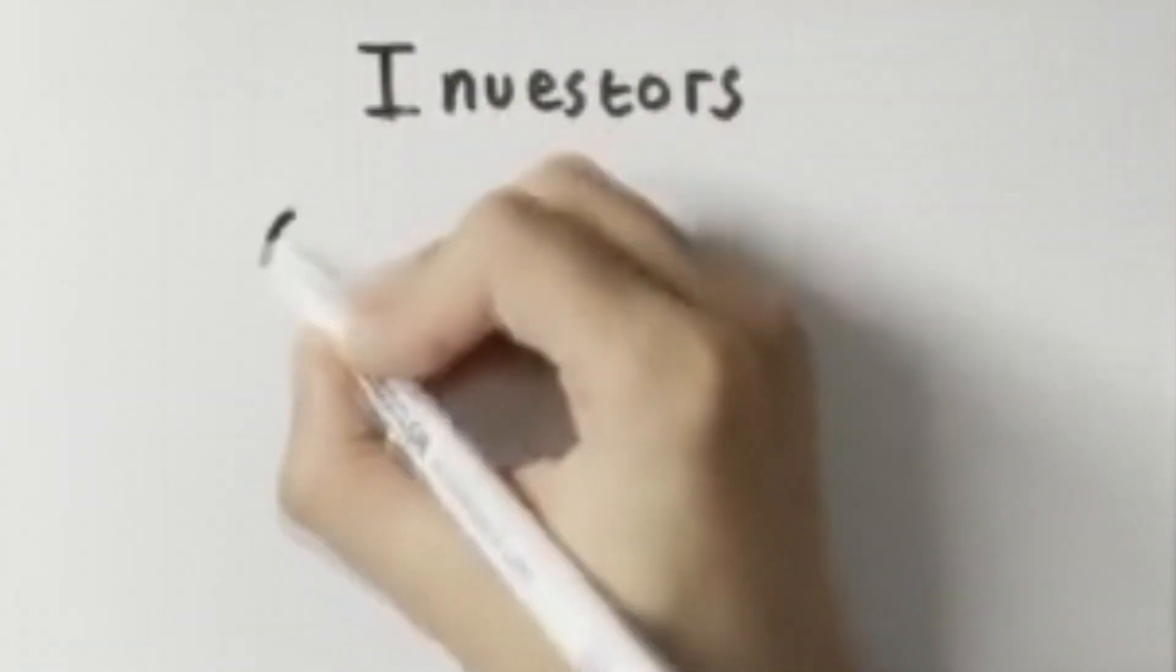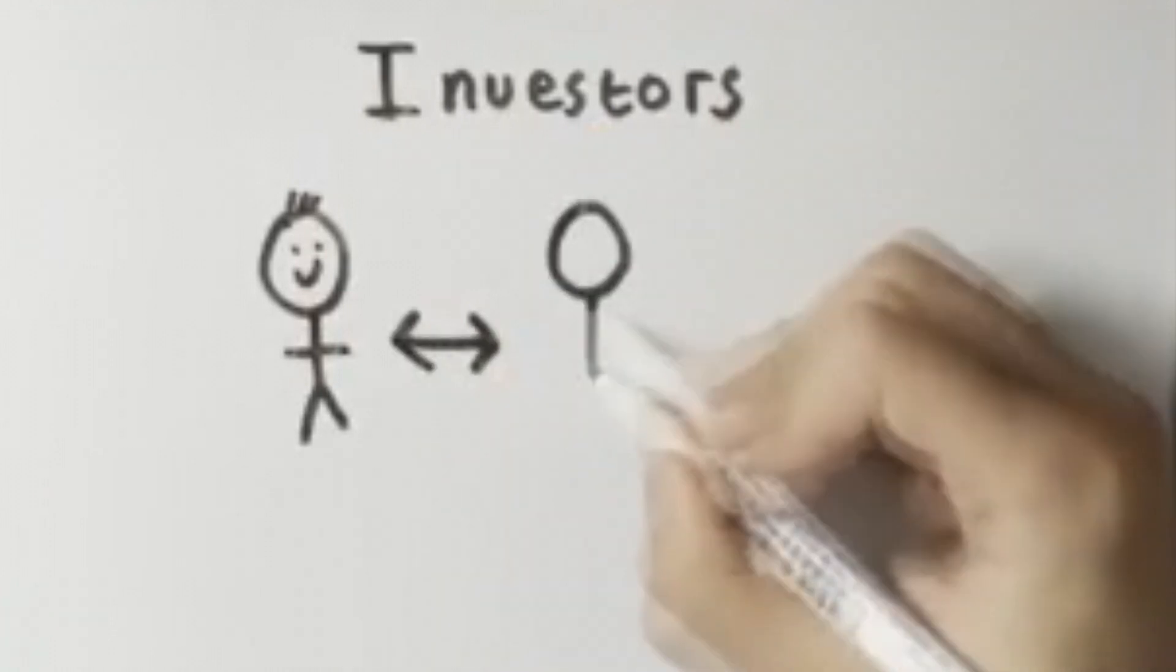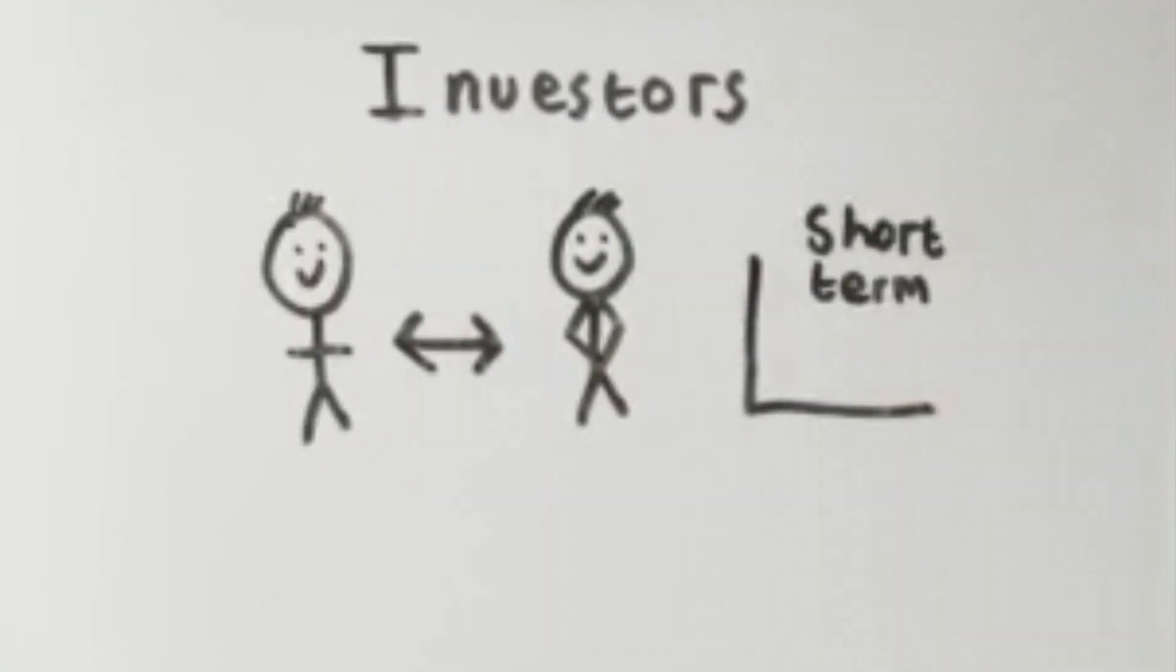This theory makes sense because most investors will review their portfolios with their brokers once a year, and so they won't be affected by the short-term volatility.